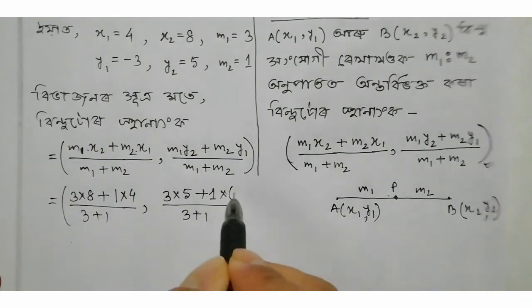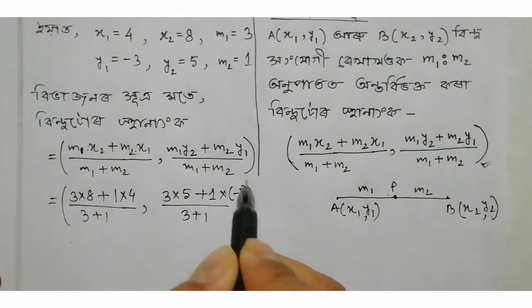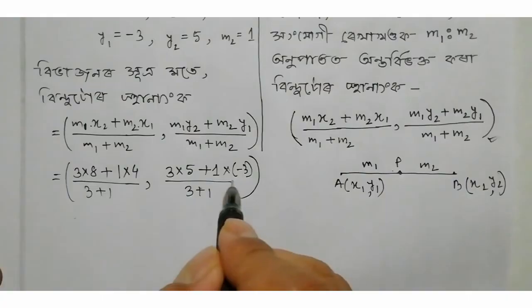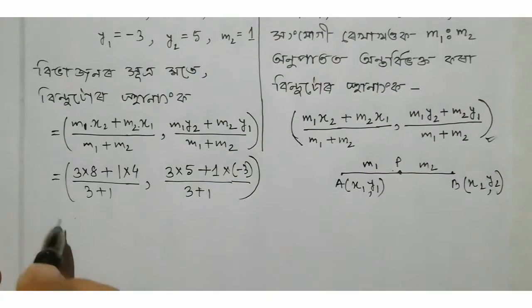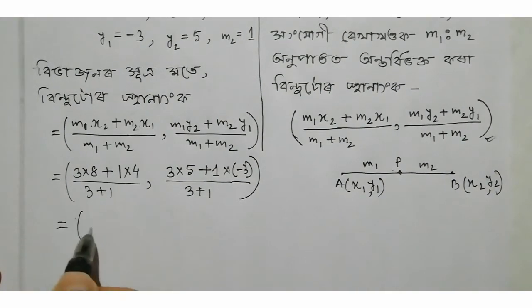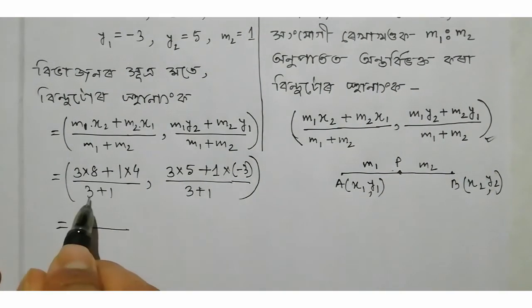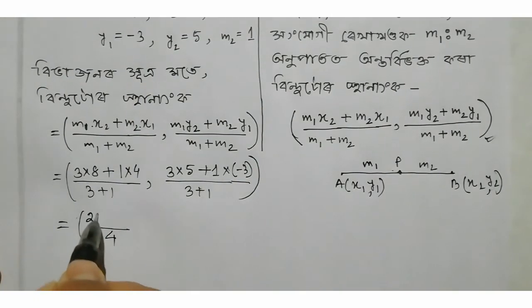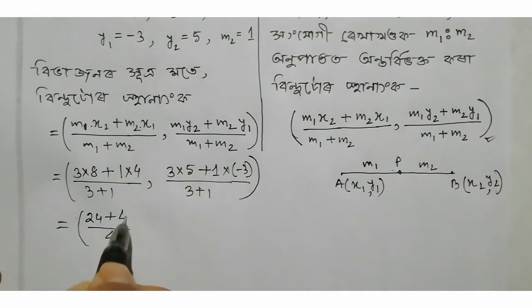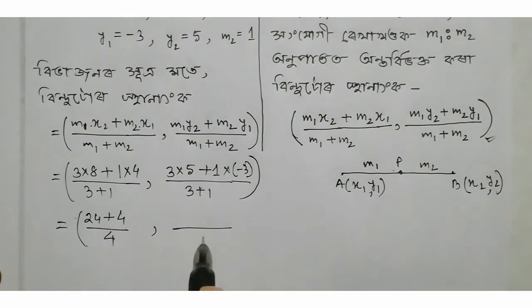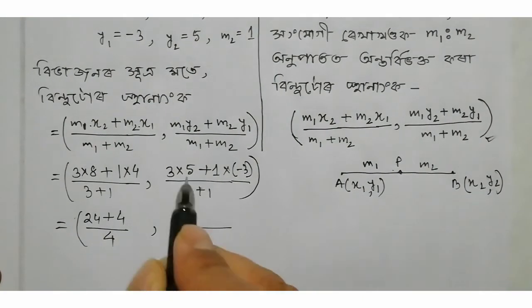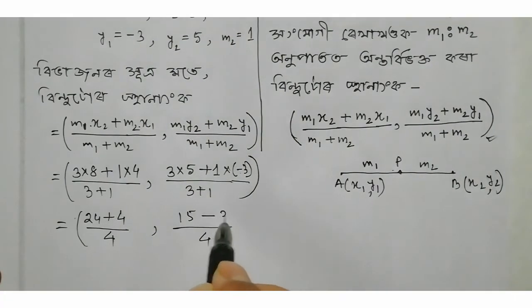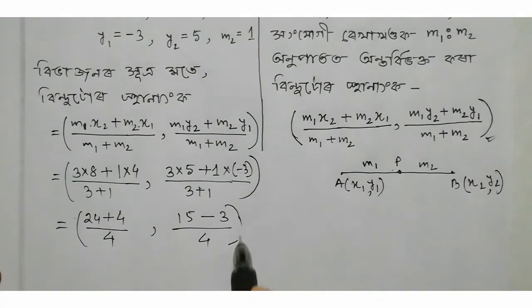M2 equals y1, so y1 is minus 3. Then close the bracket. I have my calculation — 3 plus 1 equals 4. Computing the numerator gives the result.